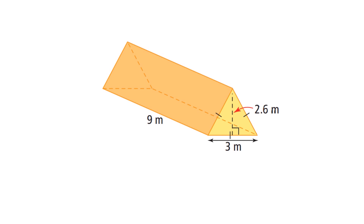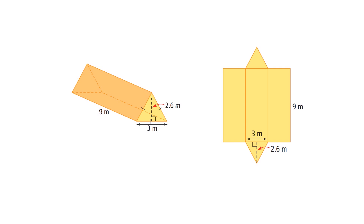Now if you were to take a rectangular prism and create a net, it would look like this. What we would have is two triangles — we have a triangle here and a triangle here. This represents the front and the back of this shape. The two triangles are always identical, so if you calculate the area of one triangle you will always know the area of the other. We can also see in our net we have three rectangles.